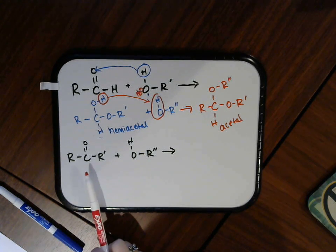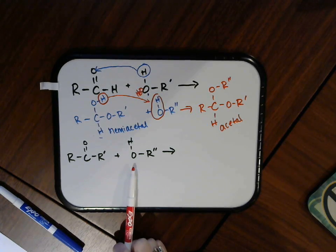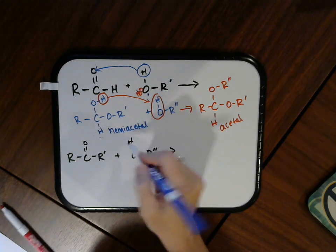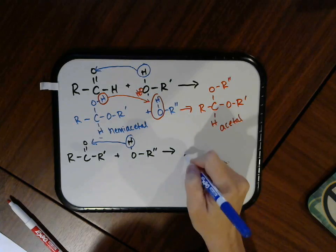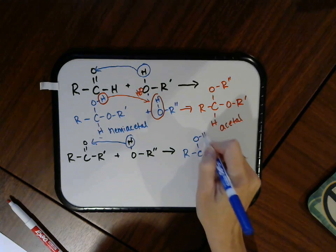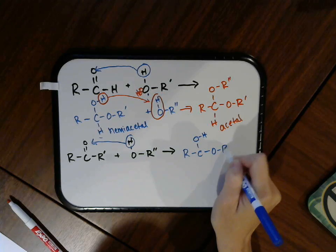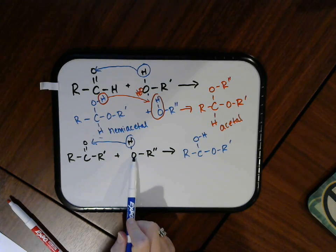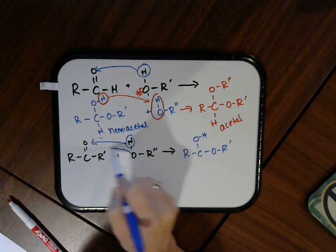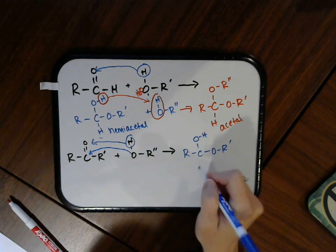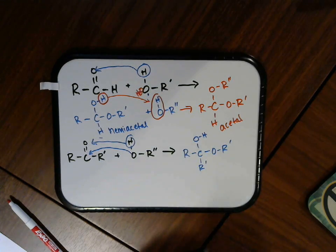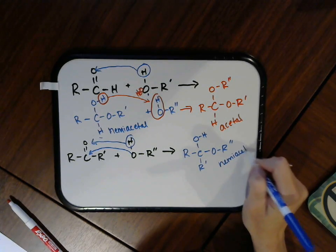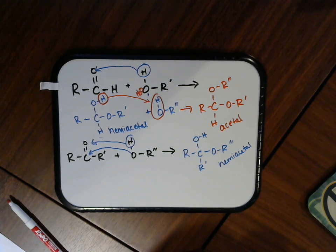The same type of reaction can happen when you react a ketone with an alcohol. So the first thing you're going to get is this hemiacetal, where this hydrogen is going to come in and attach to that oxygen. And then this oxygen right here is going to come in and bond to this carbon. And this other alkyl group is still there, I'm just going to move it to the bottom. So this is your hemiacetal, one OR group, one OH group on that.